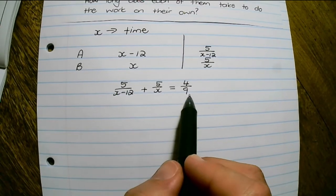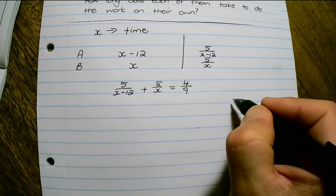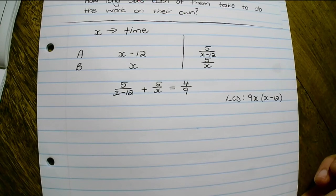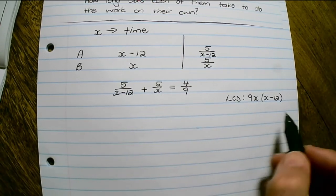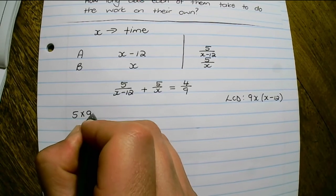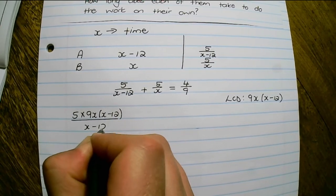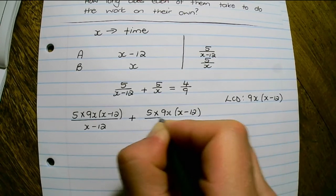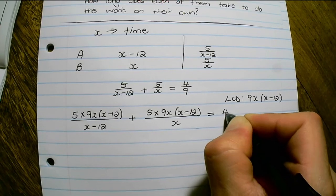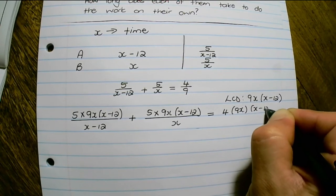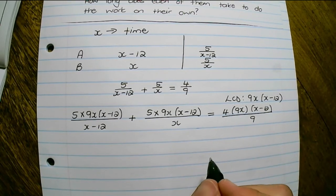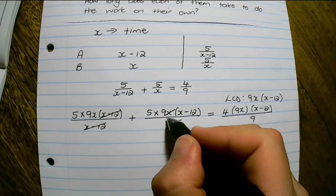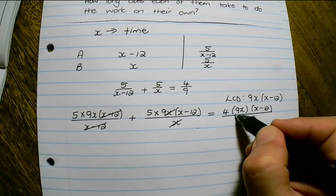Now I simply need to solve for x. I can see the LCD is 9x times (x minus 12). I multiply every term by the LCD: 5 times 9x(x-12) over (x-12), plus 5 times 9x(x-12) over x, equals 4 times 9x(x-12) over 9. Before multiplying out, if we cancel in every term — in the first term (x minus 12) cancels, in the second term the x's cancel, and on the right hand side the 9's cancel.